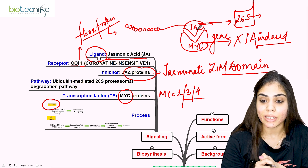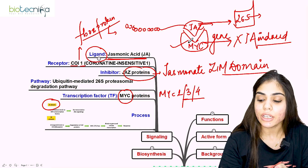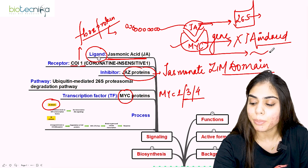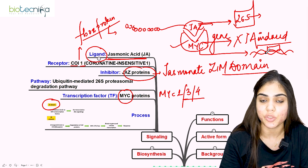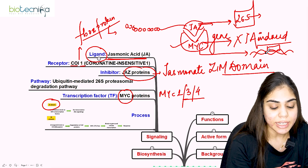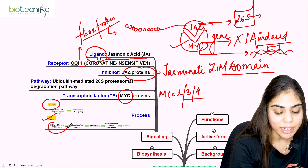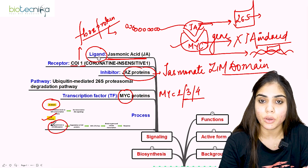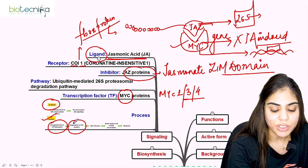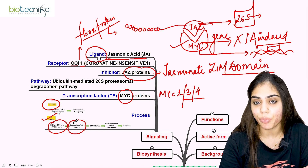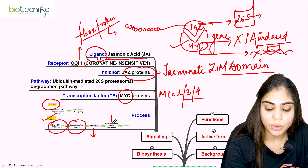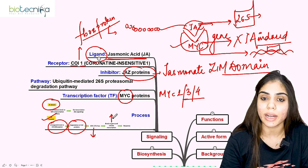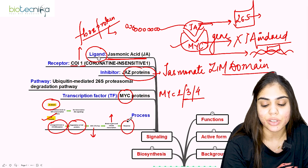Once the JAZ inhibitor is destroyed, the MYC transcription factor is free. It translocates into the nucleus, binds to the DNA, and causes the expression of jasmonic acid induced gene responses. To summarize: JA (ligand) binds COI1 (F-box receptor) → degradation of JAZ protein via 26S proteasome → MYC transcription factor is freed → binds gene → initiates gene transcription and expression.